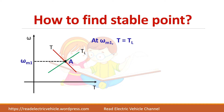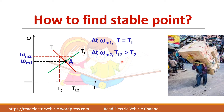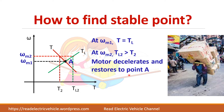Now check the same point by increasing speed instead. When speed is increased, load torque TL2 becomes greater than motor torque T2. When load torque is greater, deceleration occurs — the motor decelerates and restores to point A. As an analogy: walking alone you move faster, but carrying a load slows you down. Similarly, higher load torque causes the motor to decelerate. So A is stable in both cases.